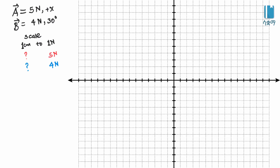Vector A is 5 Newtons along the positive x-direction. Vector B is 4 Newtons at 30 degrees from the positive x-axis, from horizontal. We will use the graphical method. First, we need to watch the previous video on graphical representation of vectors, and then continue here.